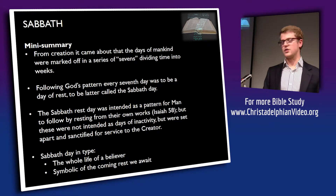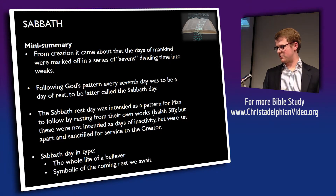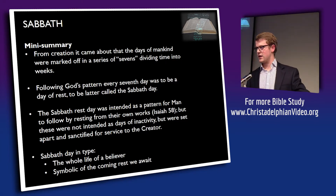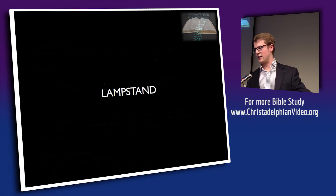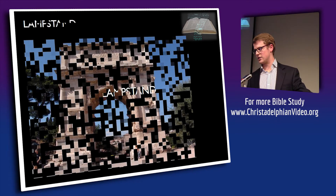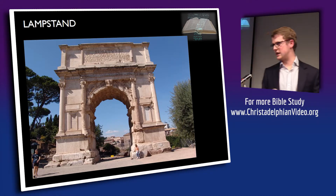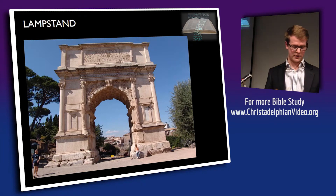Now let's look at the lampstand. When Titus overthrew Jerusalem in AD 70, they took the golden lampstand, the table of showbread, and the silver trumpets to Rome and placed them in their own temples. We know this from historical records and from the Arch of Titus in Rome, where it is depicted. Let's look at some specifics — turn to Exodus 25.